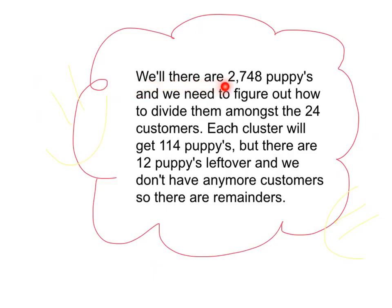There are 2,748 puppies, and we need to figure out how to divide them amongst the 24 customers. Each customer will get 114 puppies. But there are 12 puppies left over, and we don't have any more customers. So that's why there are remainders.